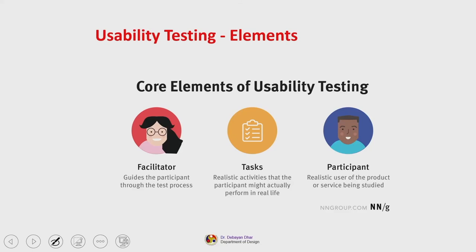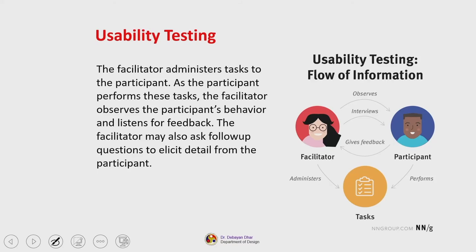At the core of usability testing are three elements: a facilitator, a task, and a participant. You have a prototype of your conceptualized software, a task the participant must complete, and a facilitator who guides the participant through the process. The facilitator administers tasks, observes behavior, listens for feedback, and recording can be done with participant permission. The facilitator may also ask follow-up questions to elicit detail.